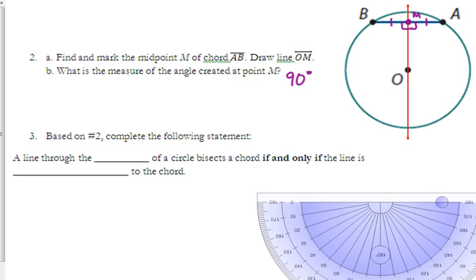What word do you think goes first? A line through the what of a circle? Through the center of a circle, bisects a chord, if and only if the line is, what do you think is in the big one? Perpendicular. Okay, perpendicular to the chord.